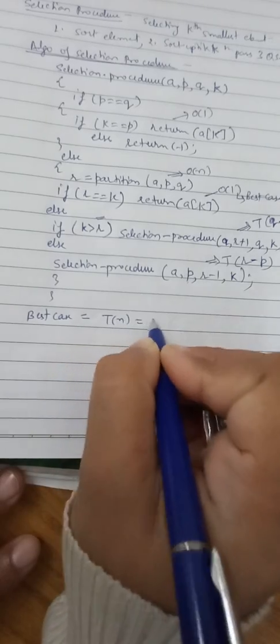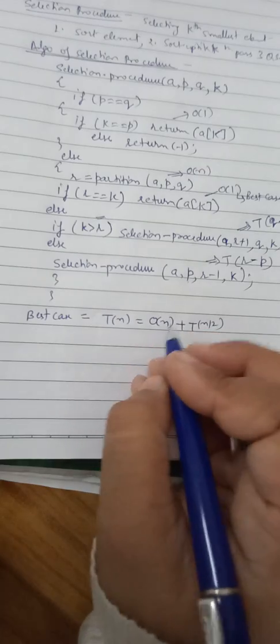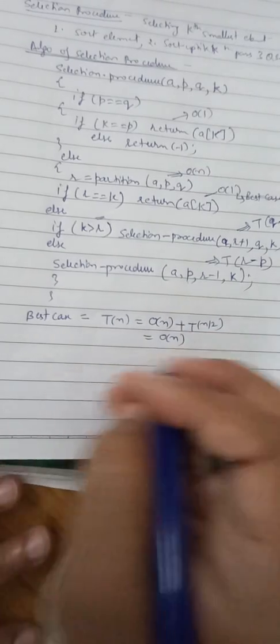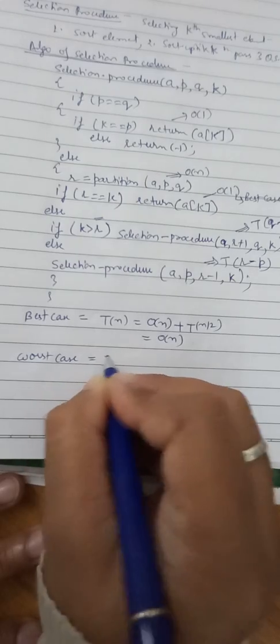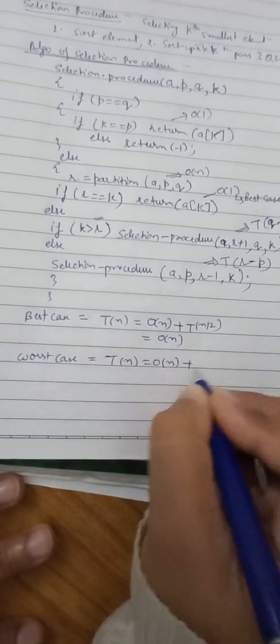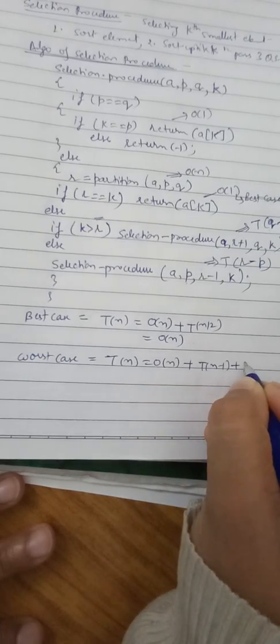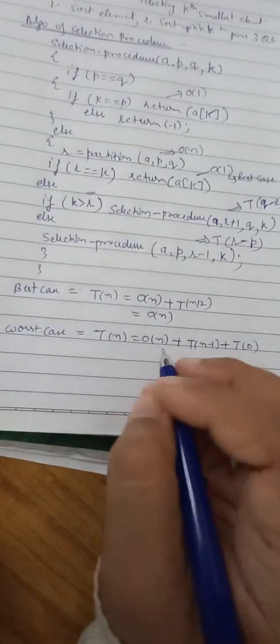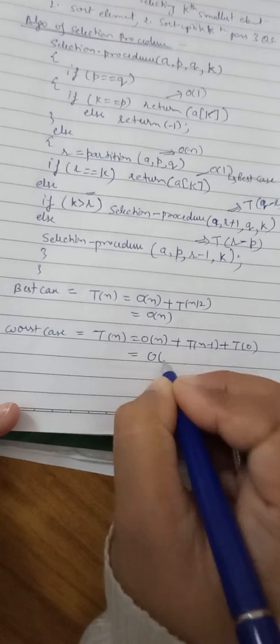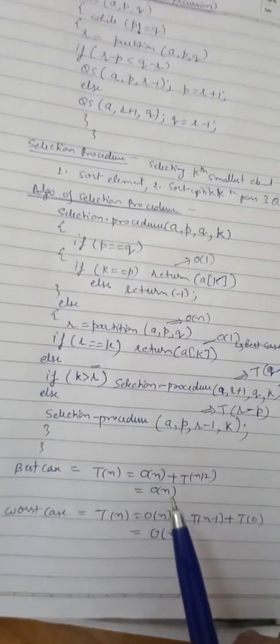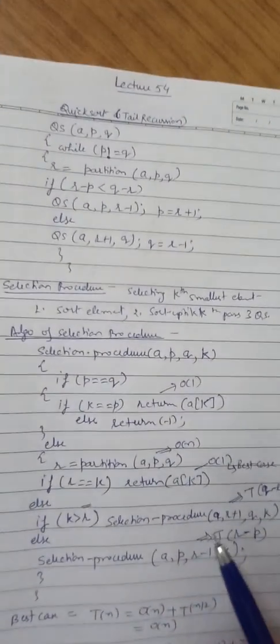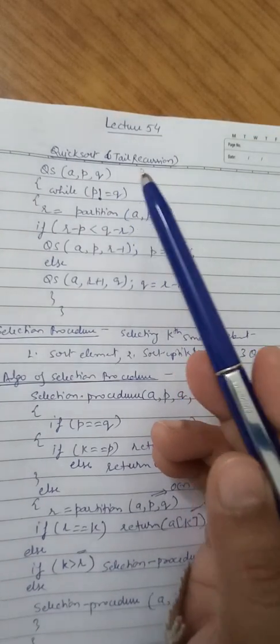So for the best case, T(n) = O(n) for partition plus T(n/2), which gives us O(n). For the worst case, T(n) = O(n) for partition plus T(n minus 1), where the partition is unequal and all elements are on one side, giving us O(n squared). When partition is equal we get O(n); when partition is not equal we get O(n squared). This completes the selection procedure and the quicksort with tail recursion.